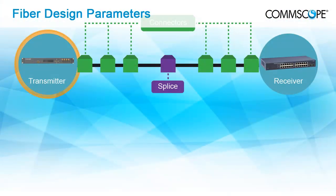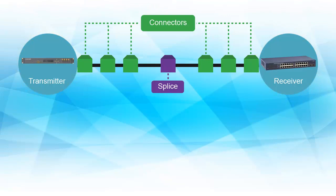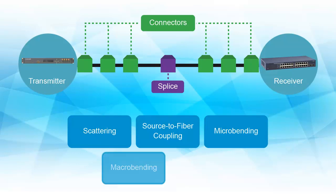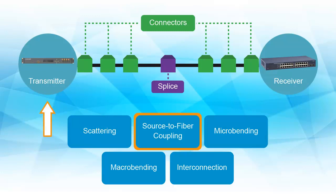As stated, the total path attenuation between the transmitter and receiver is the summation of the lost contributors: scattering, source-to-fiber coupling, micro-bending, macro-bending, and interconnection. The effect of source-to-fiber coupling occurs only once at the front end of a system, whereas the total scattering and micro-bending terms, in decibels per kilometer, continuously erode this coupled power as a function of length.